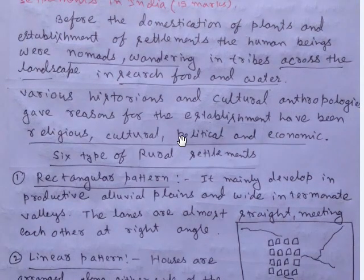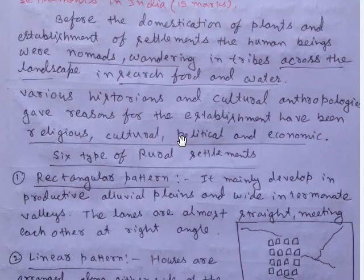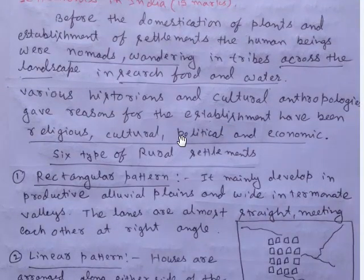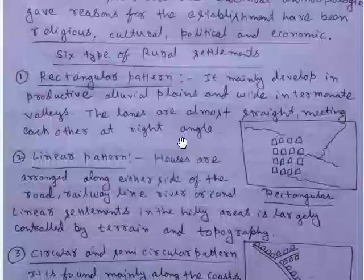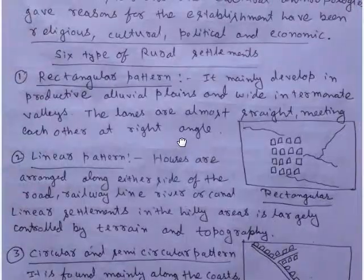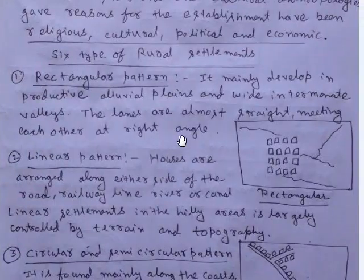The reasons given for the establishment of settlements have been religious, cultural, political, and economic. There are six types of rural settlements identified based on their patterns.